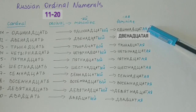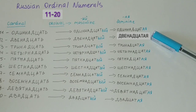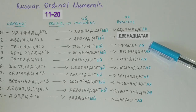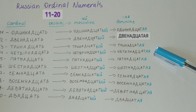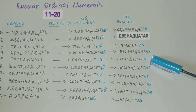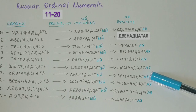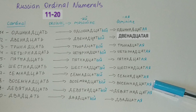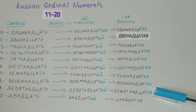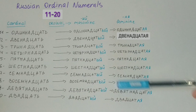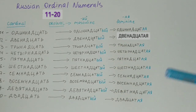The eleventh (feminine) is одиннадцатая. Twelfth is двенадцатая. Thirteenth is тринадцатая. Fourteenth is четырнадцатая. Fifteenth is пятнадцатая. Sixteenth is шестнадцатая. Seventeenth is семнадцатая. Eighteenth is восемнадцатая. Nineteenth is девятнадцатая. And twentieth is двадцатая — remember, двадцать but двадцатая. Remember about the stress here.